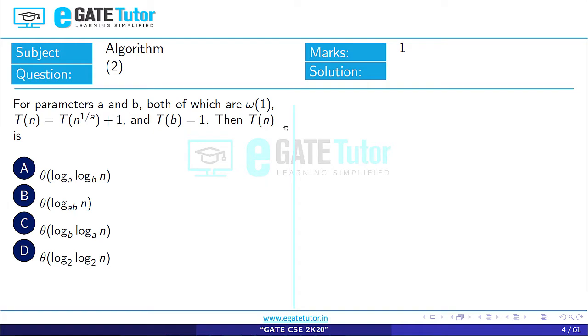To find out the value of T(n), we are using the substitution method. First, we will write the equation: T(n) is equal to T(n^(1/a)) + 1.